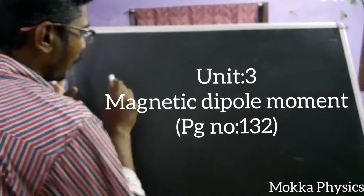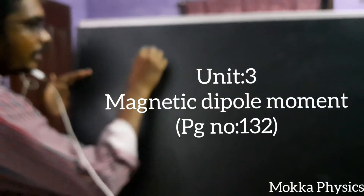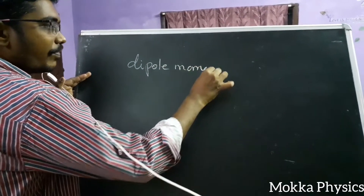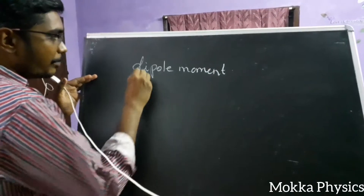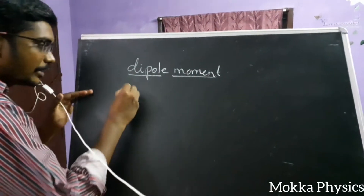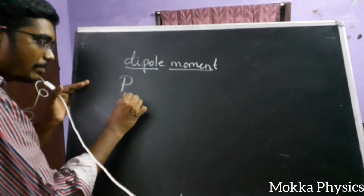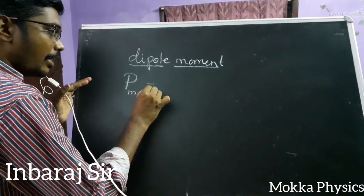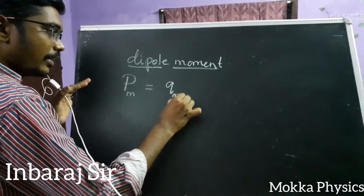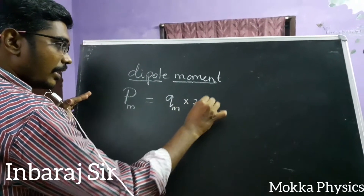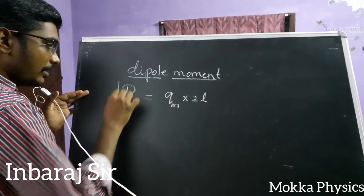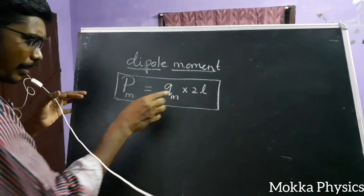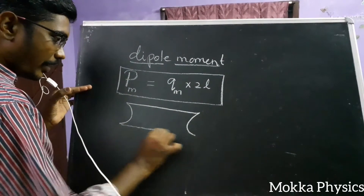Let's look at two definitions relevant to magnets. The first is called magnetic dipole moment. In the first lesson, we learned about electric dipole moment. Similarly, we define magnetic moment using small m. The pole strength of a magnet and the distance between the two poles — you can measure the distance between the poles, and in this way you can measure the magnetic strength of a magnet.